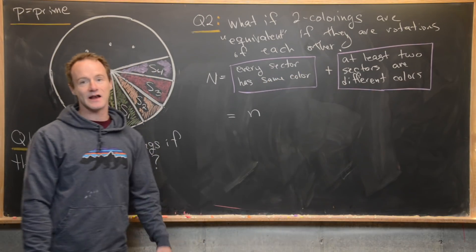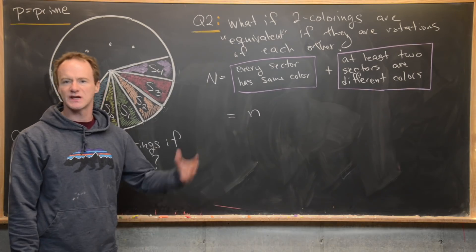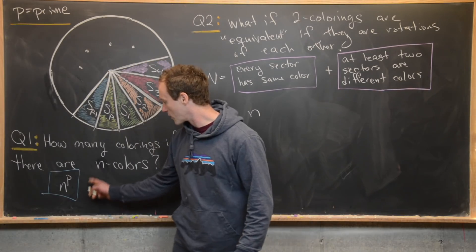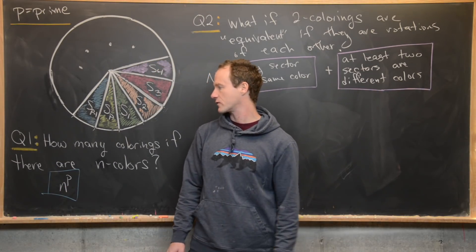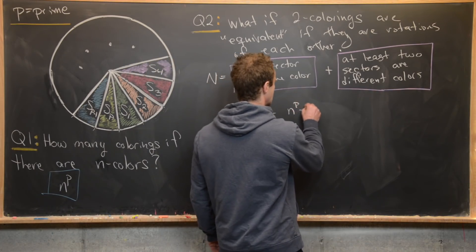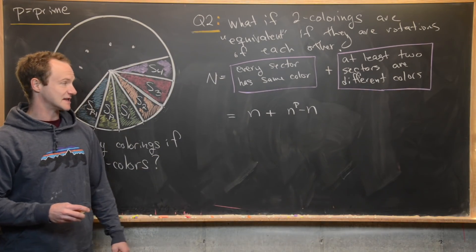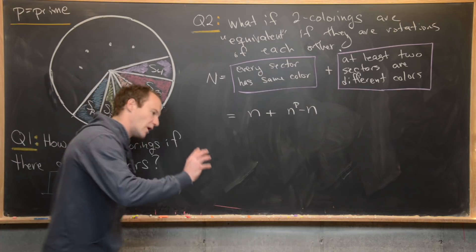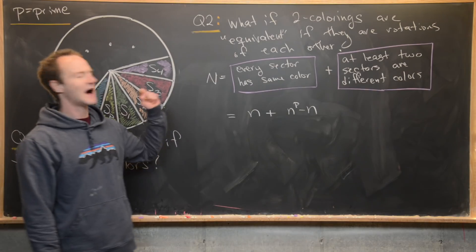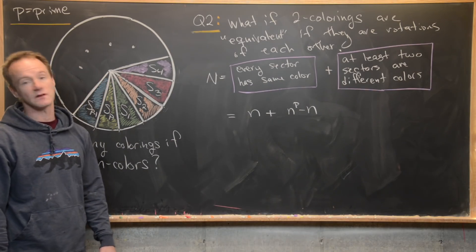To this we need to add the number of colorings where at least two sectors are different colors. Starting from all colorings in question one, that's n to the P minus n. At the moment we've counted all colorings as being inequivalent, even if one can be rotated into the other. We need to divide by a number to ensure we're not double counting equivalent colorings.